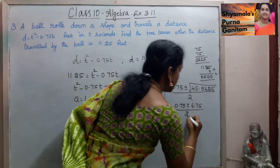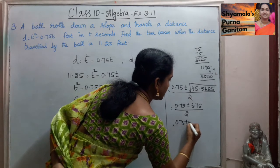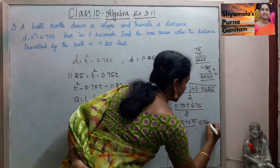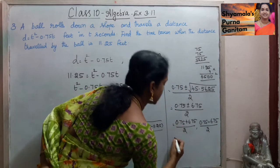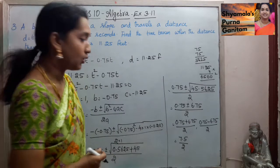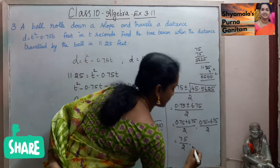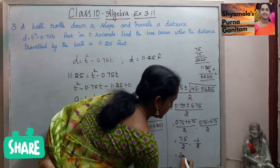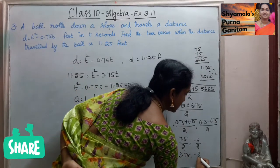So the numerator divided by 2 gives us two values. First: 0.75 plus 6.75 divided by 2 equals 7.5 divided by 2 equals 3.75. Second: 0.75 minus 6.75 divided by 2 equals minus 6 divided by 2 equals minus 3.